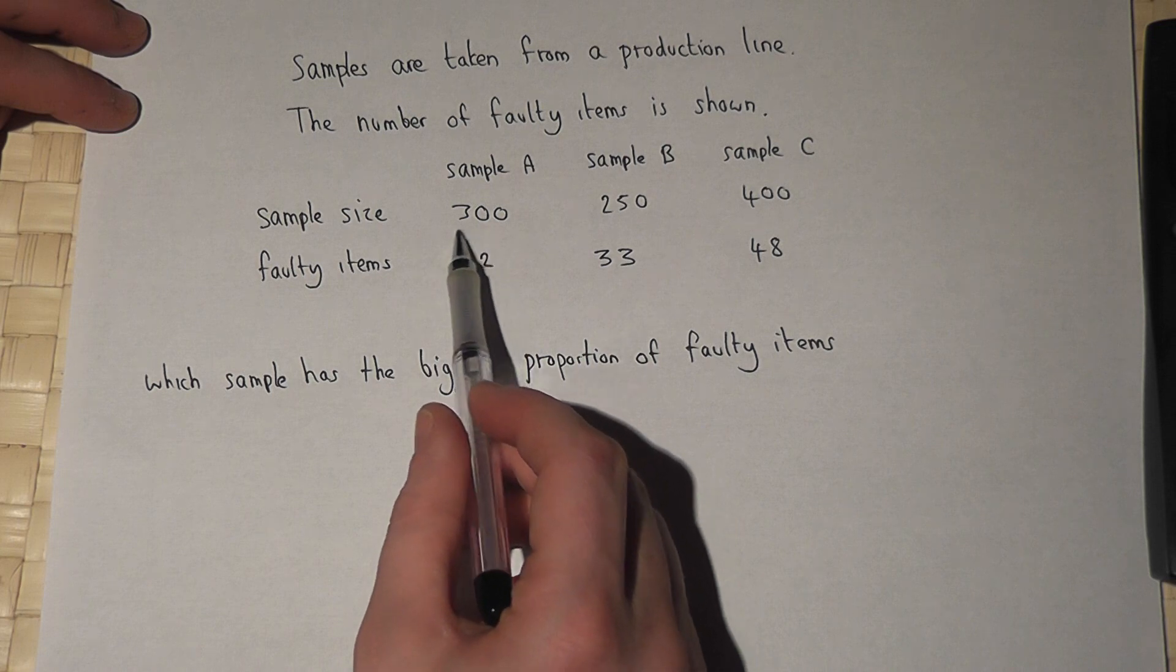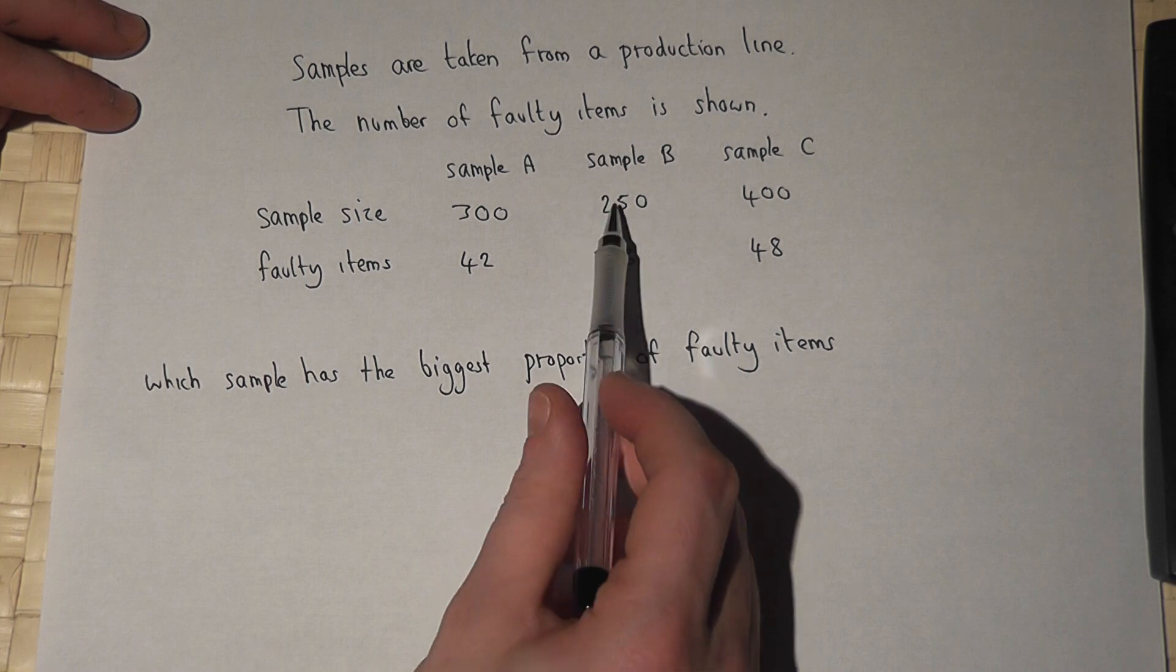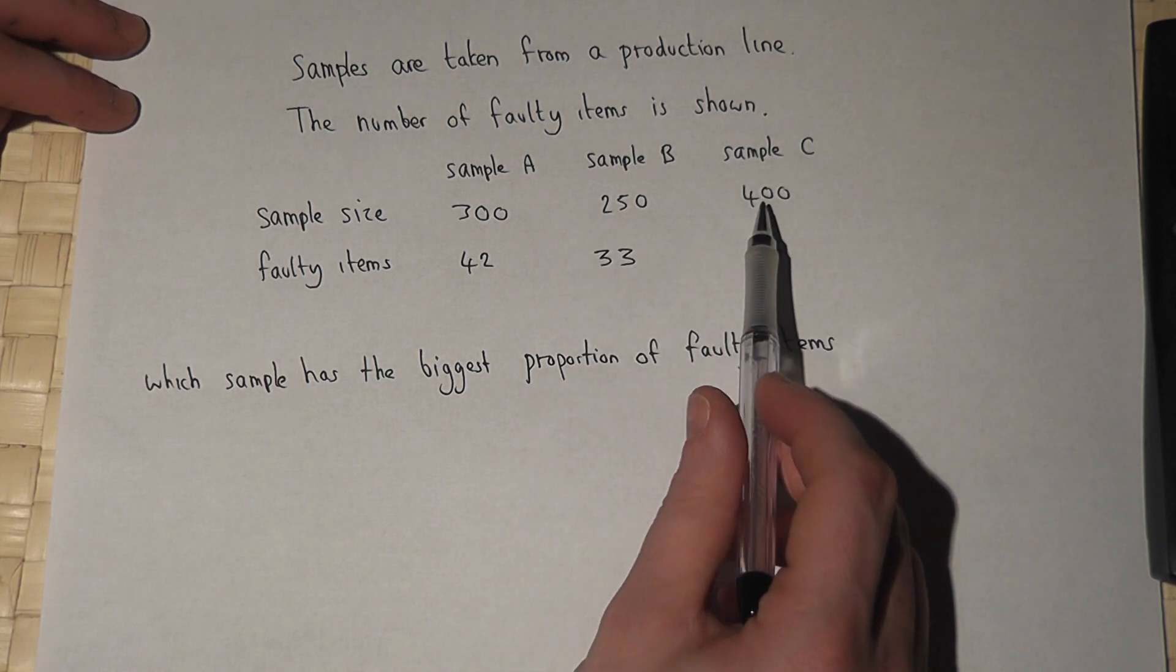42 out of 300 items were faulty. Sample B is 33 out of 250, and sample C was 48 out of 400.